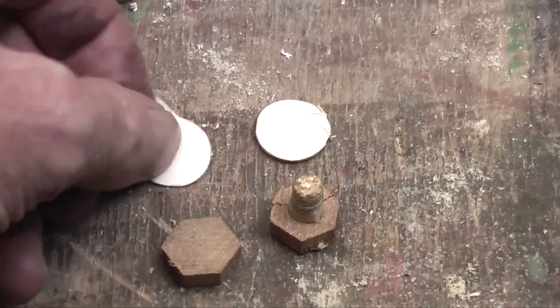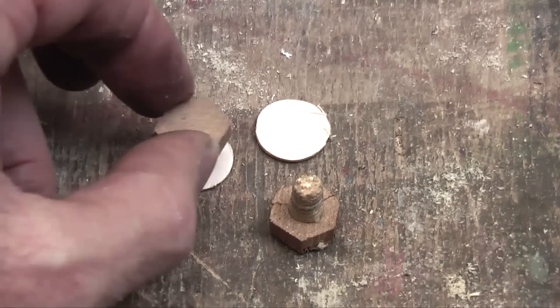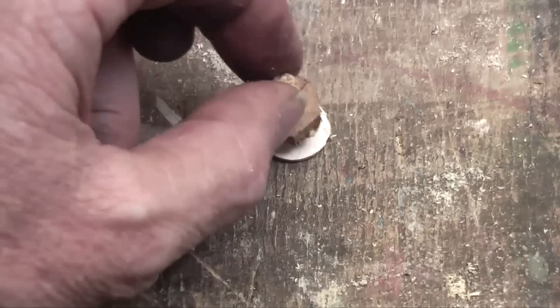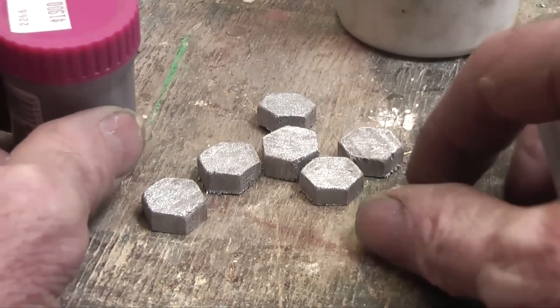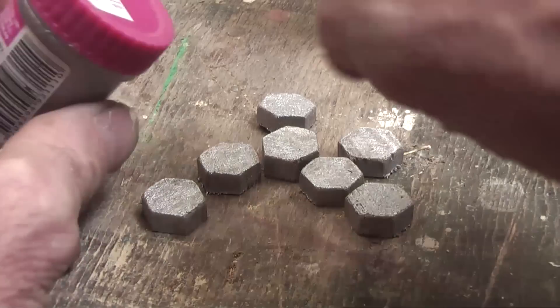Now if you want washers you can just cut some circles of cardboard and then glue those on top to make it look like they've got washers. You can paint the things when they are stuck on to your scenery.